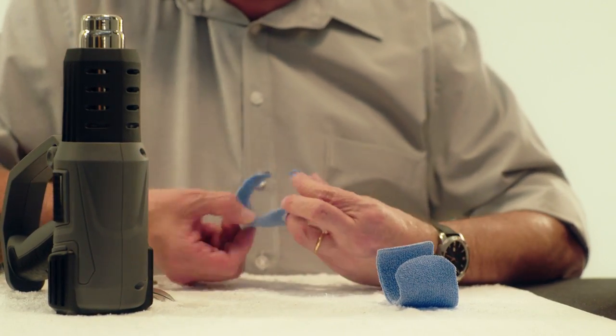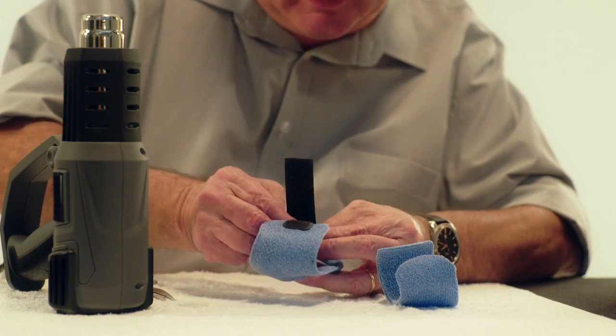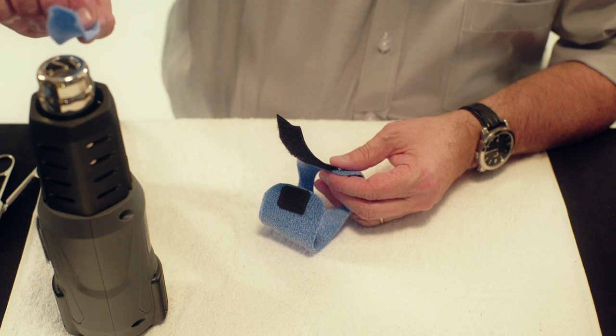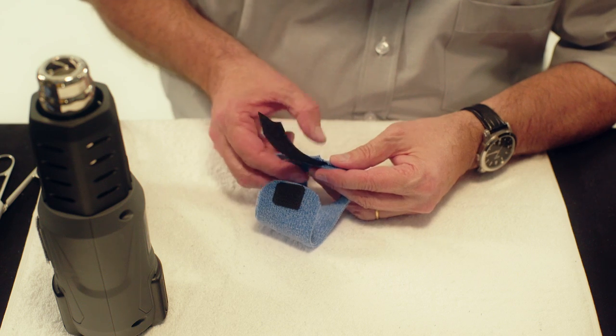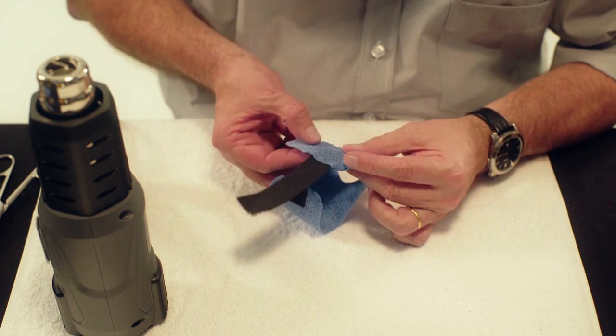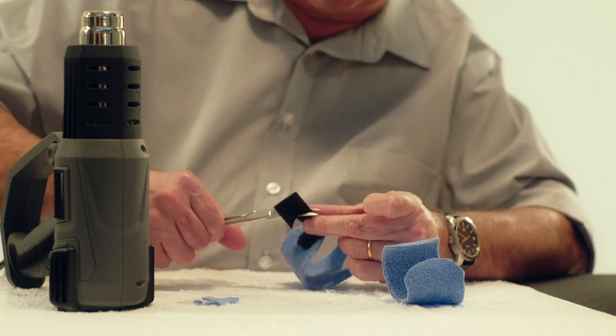Heat the other side with a heat gun and stick a piece of velcro loop with the fuzzy side down onto the orthosis. Secure the velcro loop by heating a small piece of Orphicast with the heat gun and stick it over the edges of the velcro loop. Do the same with the other part of the orthosis.